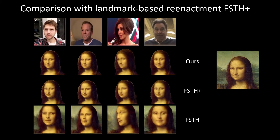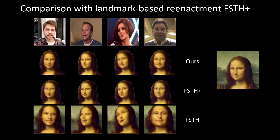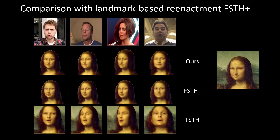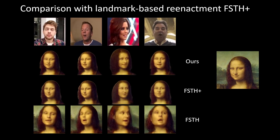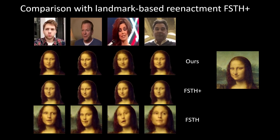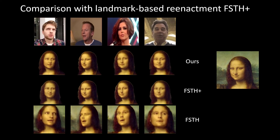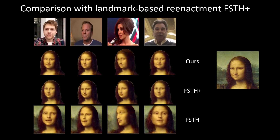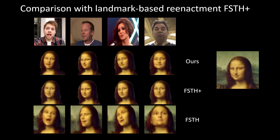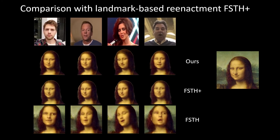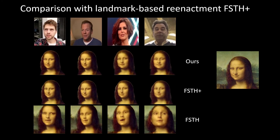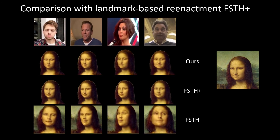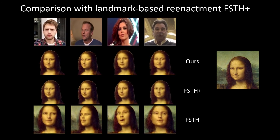We also compare with the modified version of Zakharov et al., FSTH+, which is closer to our system. In particular, we add segmentation to their setup and input keypoints into the generator via adaptive instance normalizations. In this case, the baseline has comparable identity preservation, but much less accurate mimic reproduction, especially in terms of lip sync. Note that our approach preserves mimics and moves lips much better.